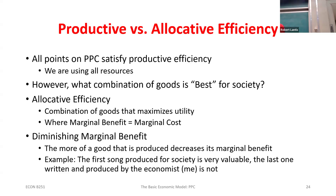We end up with increasing marginal costs. We also talked about how as I consume more of something — to the point of the CL session — each one has less and less additional benefit, so we've got decreasing marginal benefits and increasing marginal costs. Based off last week, we said we will choose to do something as long as marginal benefit is greater than or equal to marginal cost, stopping right at the point where those two lines intersect.